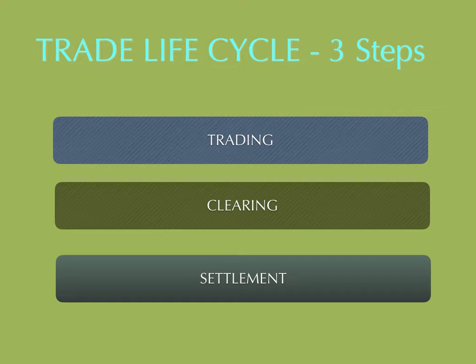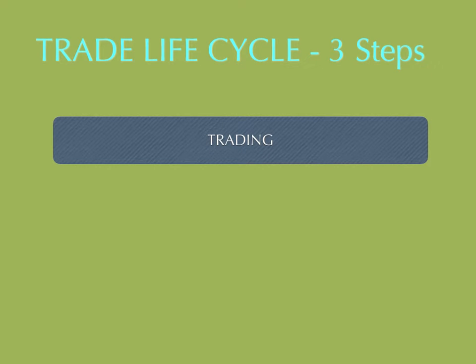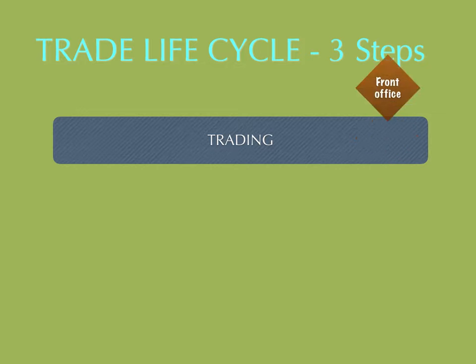This three-tiered structure works something like this. Trading is normally done in the front offices — whether it's the New York Stock Exchange, Nasdaq, London Stock Exchange, or Tokyo Stock Markets. It is a front office activity which results in the creation of positions — long or short positions — and the creation of obligations.